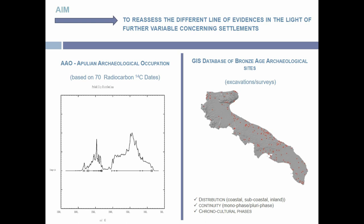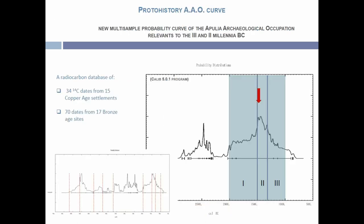We begin with the Apulian archaeological occupation, derived from the analysis of C-14 dates, and we elaborate a curve on the intensity of occupation. The other analysis is based on a GIS database of the different sites. This is our curve — this is the focus of our period, the Bronze Age — and this is our reconstruction from the Neolithic through to the Bronze Age.